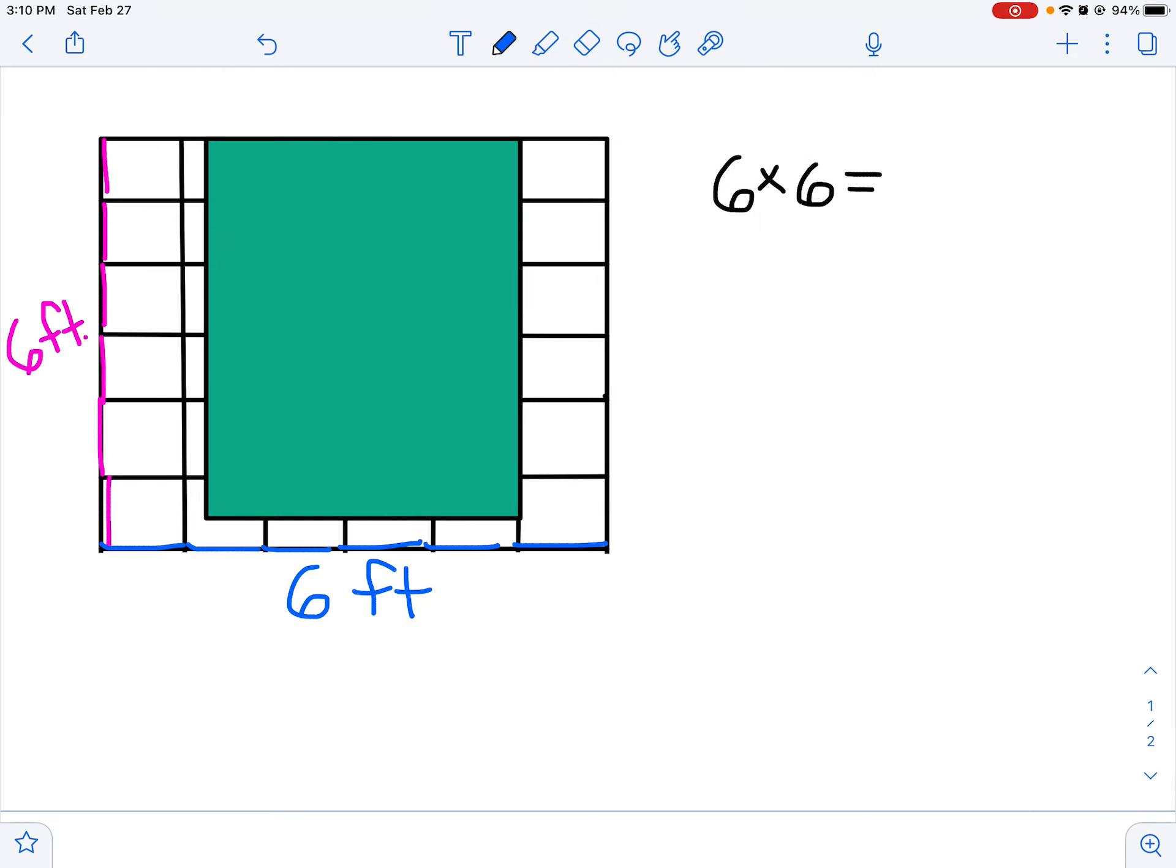One thing we could do—we could count by sixes. I could keep track, I can say this is six, twelve, eighteen, twenty-four, thirty, and thirty-six.